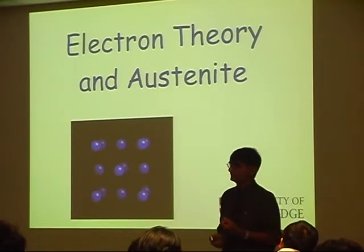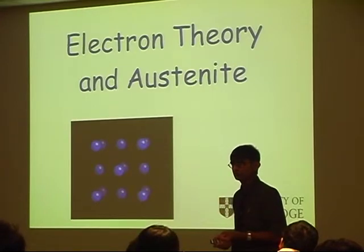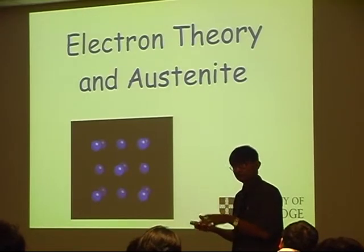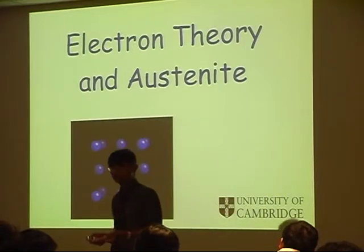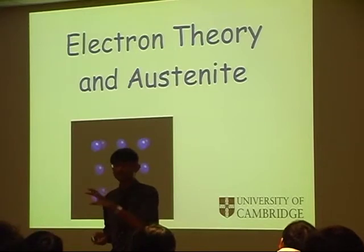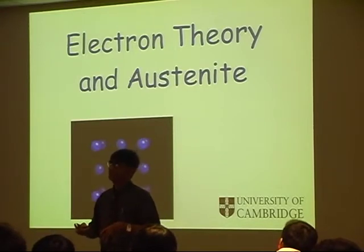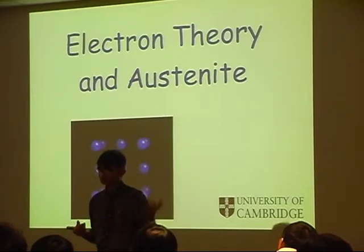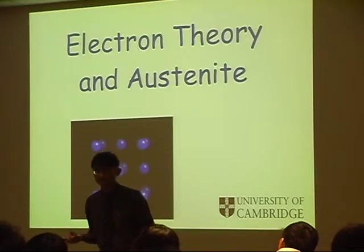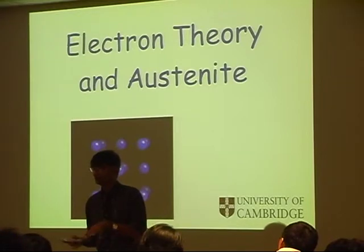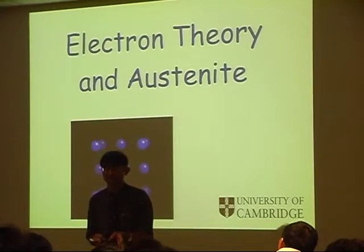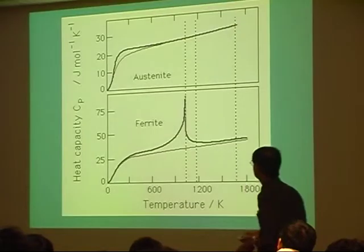So when electron theory became popular, people started to do calculations to see whether this two-state model is correct. And sure enough, electron theory also says that there should be many different states of austenite. Now, in that sense, it has helped us to understand. It hasn't produced anything new. We already knew that from Kaufman, Clougherty, and Weiss. But it helps to give confidence in the theory. And let me just explain that theory a bit more.